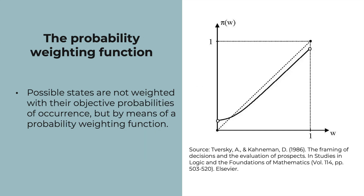Furthermore, the researchers postulate that possible environmental states are not weighted with their objective probabilities of occurrence, but by means of a probability weighting function. This tends to assign too high a weight to extremely improbable events and too low a weight to almost certain events. As you can see in these illustrations, the probability weighting function transforms the probabilities of occurrence of outcomes into probability weights. This has been further developed in cumulative prospect theory, where probability weights are not derived from the isolated probabilities of individual outcomes, but from cumulative probabilities.